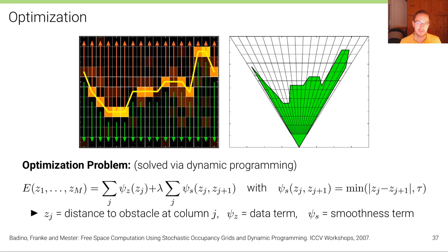The output of this optimization is a free space estimate where the boundary passes through the high likelihood regions and is enforced to be smooth.